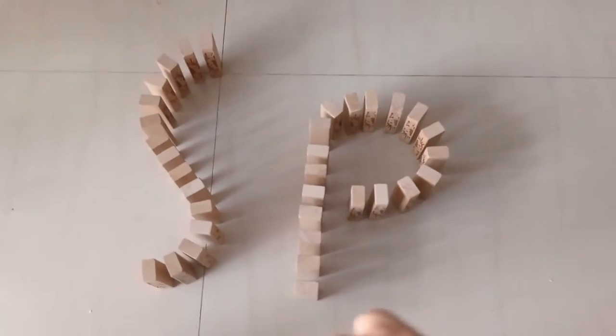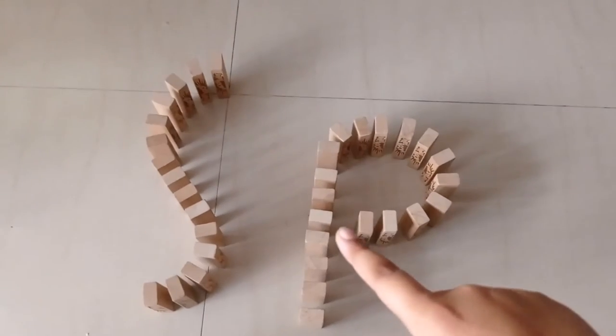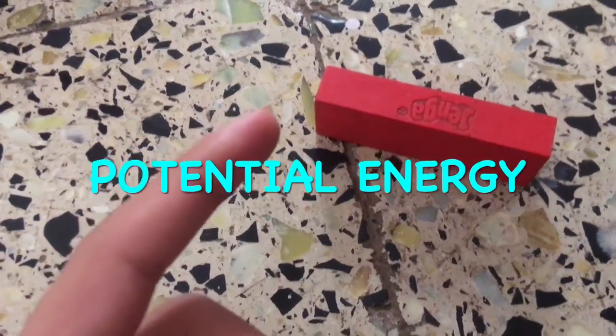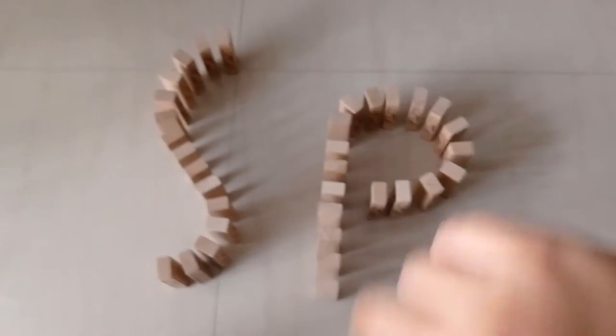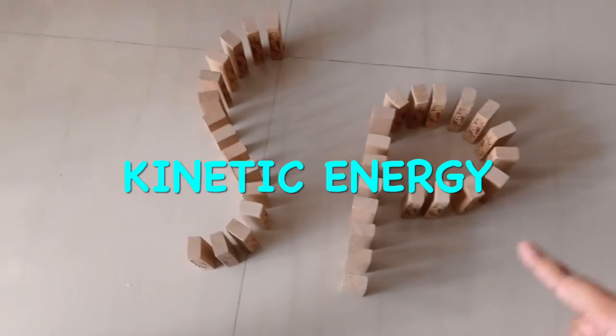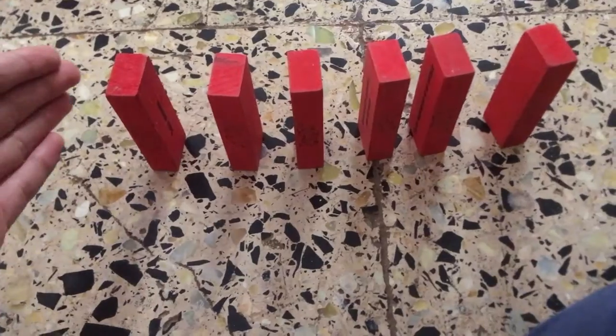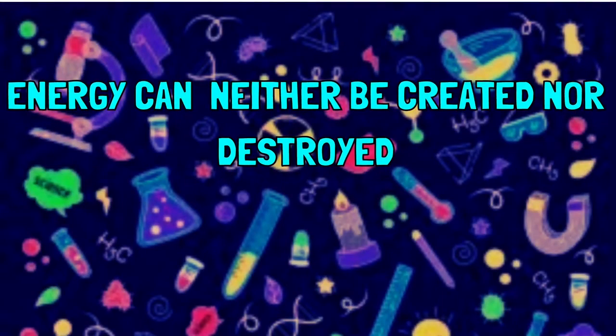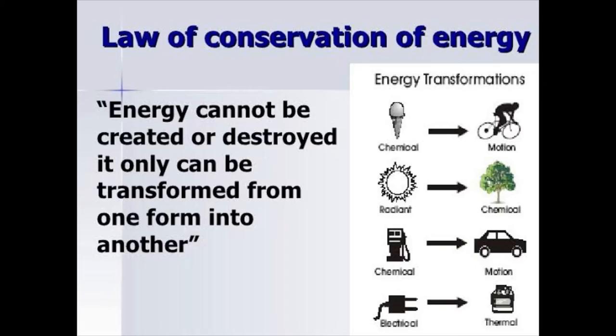When you tip over a domino piece from its state of rest, its energy changes. When a domino piece is still, it has potential energy, and when it falls, its potential energy is converted into kinetic energy. It gets converted as the piece is in motion, and that energy cannot be created nor destroyed. This is known as the law of conservation of energy.